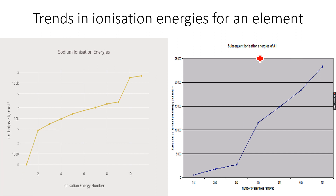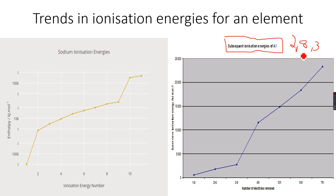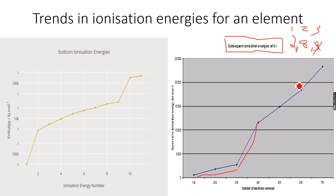We can explain this further using the other graph, which shows subsequent ionization energies of aluminium — basically the same graph but for aluminium. Aluminium has 13 electrons, so its conventional electronic configuration is 2-8-3: first shell, second shell, third shell. We start removing from the third shell, the outermost shell. You can see there is not much increase — a very mild increase — because you are still on the same shell. However, once you've removed all three electrons, there is a steep increase in ionization energies, because you've come to the second shell. Again, change in shell.